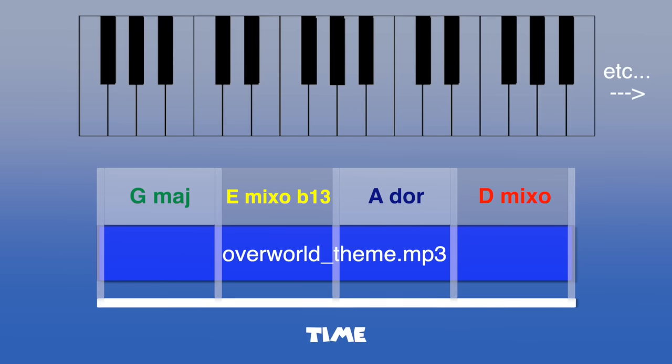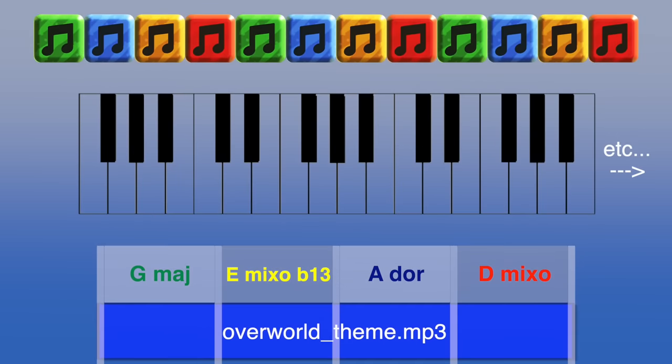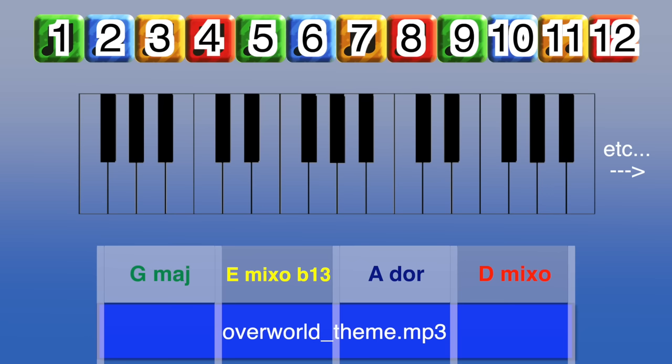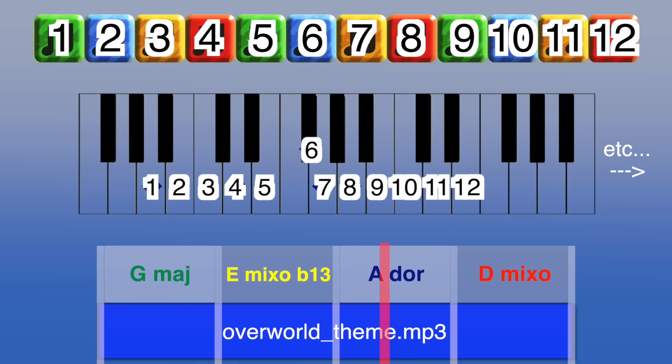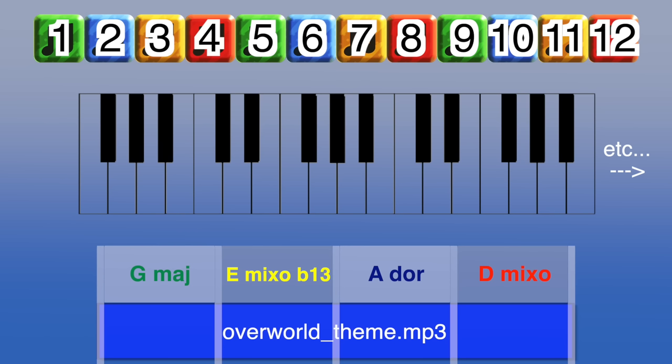The final step is programming the note blocks themselves. Each note block could be assigned a number value in the code, and that number corresponds to a numbered note in the chord scale. With that, everything is complete — Mario steps on the note blocks, the game knows which pool of notes to use, and we hear a beautiful little sequence of marimba notes that infallibly harmonize with the background music at any given point, regardless of the order and timing of the player stepping on the blocks.